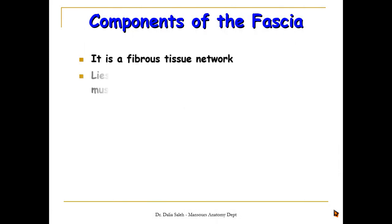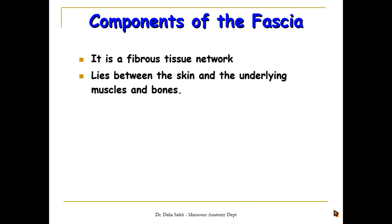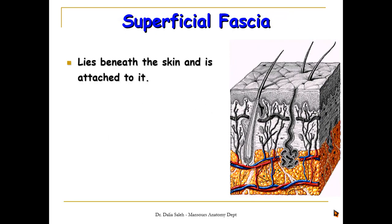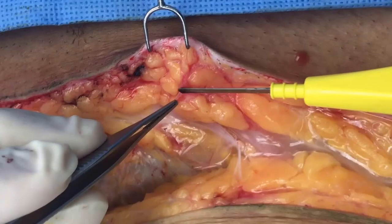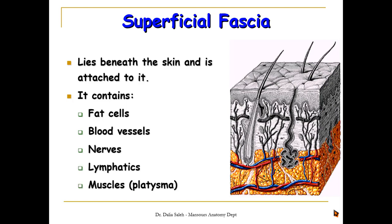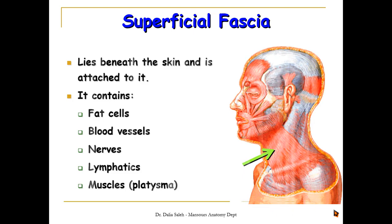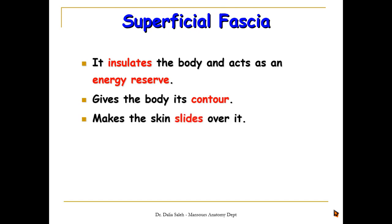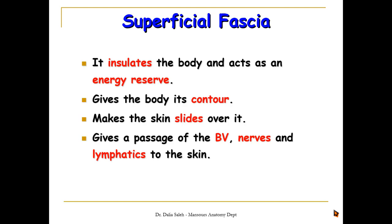The fascia is a fibrous tissue network that lies between the skin and the underlying muscles or bones. It is composed of two layers. The layer that lies just under the skin we call the superficial fascia, and the deeply situated layer is called the deep fascia. The superficial fascia lies beneath the skin and is firmly attached to it. It contains fat cells, blood vessels, nerves, lymphatics, and sometimes muscles in certain areas, such as the platysma muscle at the neck region. The superficial fascia insulates the body, acts as an energy reserve, gives the body its contour and shape, allows the skin to slide over it, and provides a passage for blood vessels, nerves, and lymphatics to the skin.